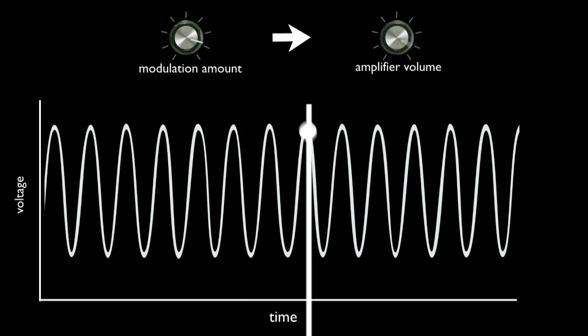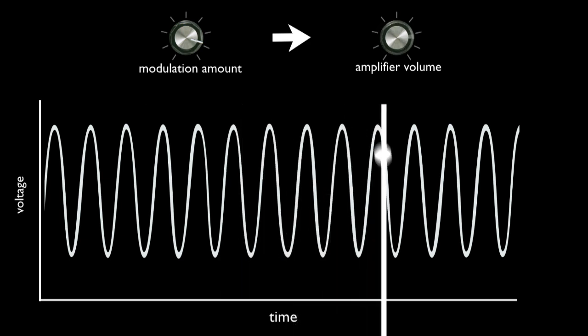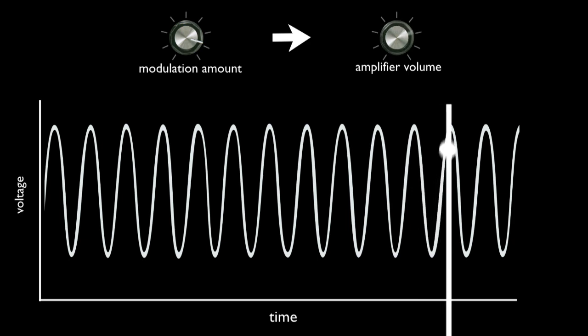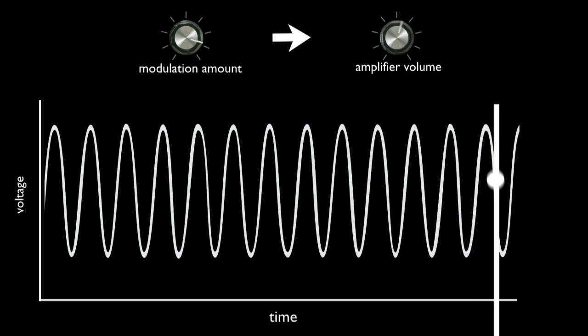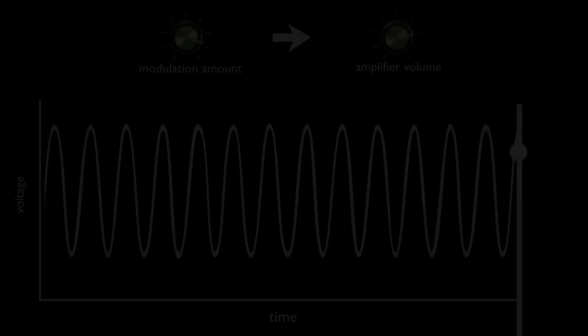Now, of course, this doesn't actually turn the knob, but the knob turning demonstrates what effect the modulation is having on the volume of the amplifier, as if someone was turning that knob.